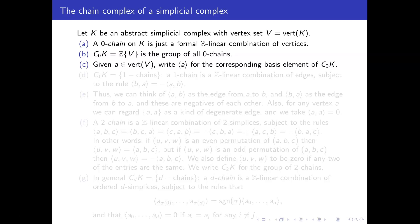So pointy brackets ⟨a⟩, that is a 0-chain. And if we had two vertices a and b, then five pointy brackets ⟨a⟩ minus seven pointy brackets ⟨b⟩, that would be a 0-chain.